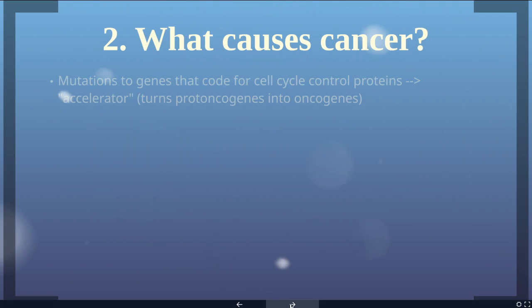What causes cancer? The main cause is mutations to genes that code for cell cycle proteins — proteins that control whether those checkpoint lights are red or green. There is a specific set of genes that code for proteins controlling the cell cycle: these are the proto-oncogenes. If one of these mutates, it can turn into what's called an oncogene, and oncogenes produce proteins that accelerate cells through the cell cycle.